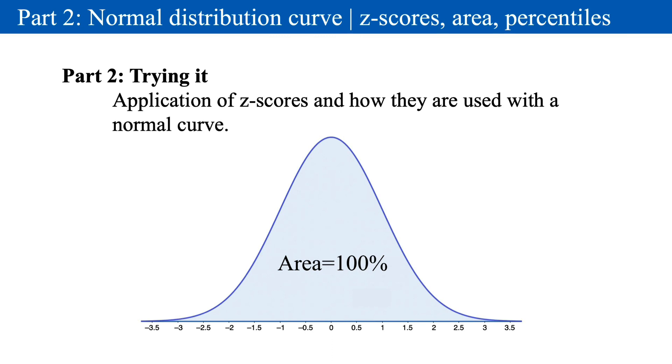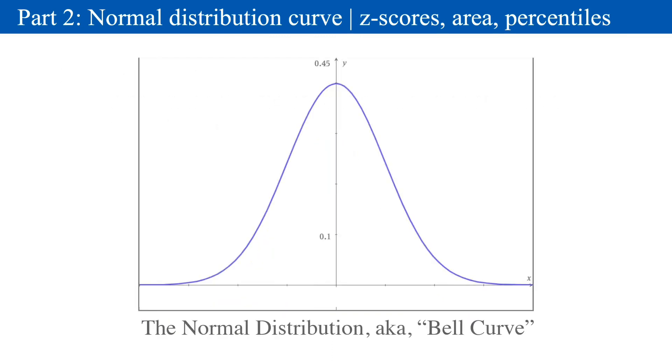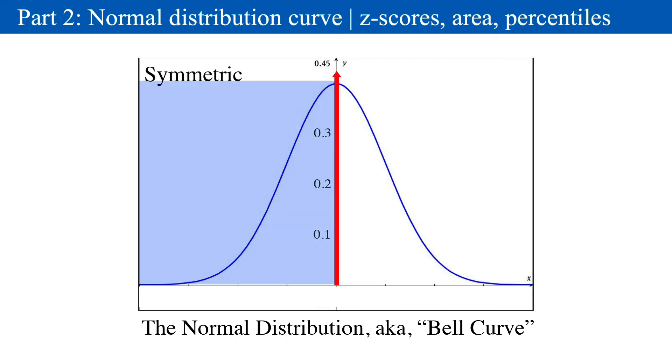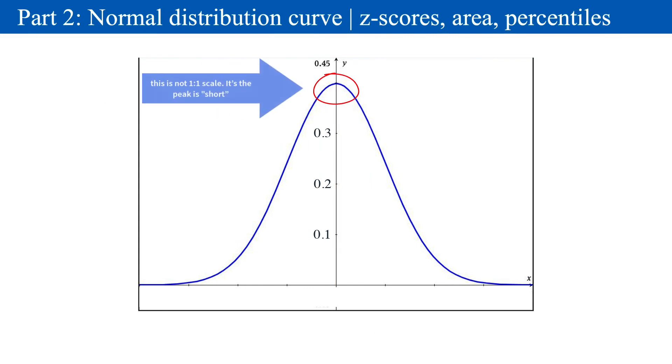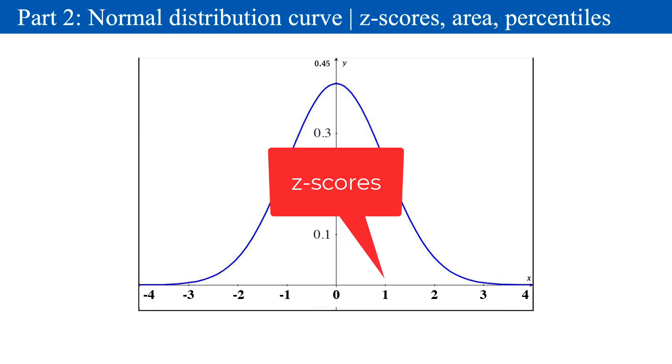Let's take a tour of the normal distribution curve, aka the bell curve. It has some familiar parts. For one thing, it's symmetric about the y-axis. The curve has a maximum height at about 0.4, so it's somewhat short. The x-axis below will have 0 in the center. And you can think of these numbers as z-scores.